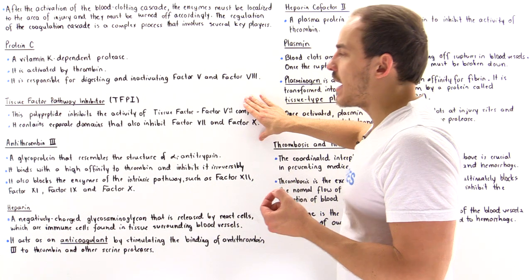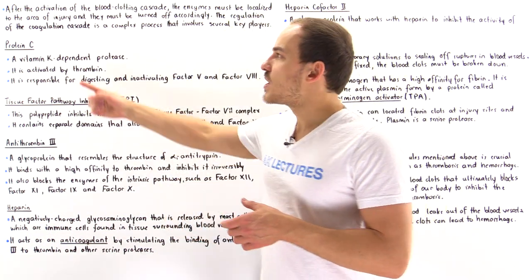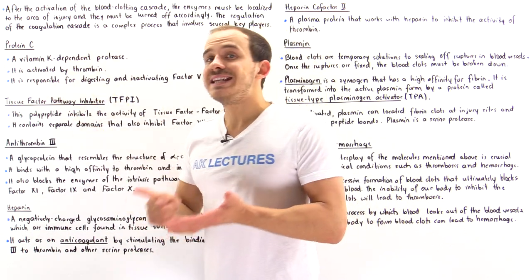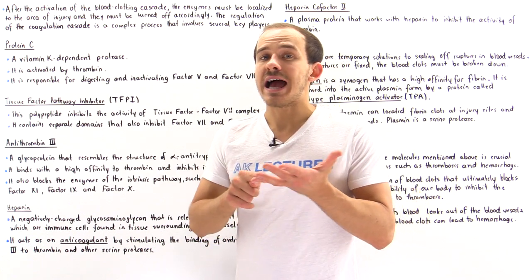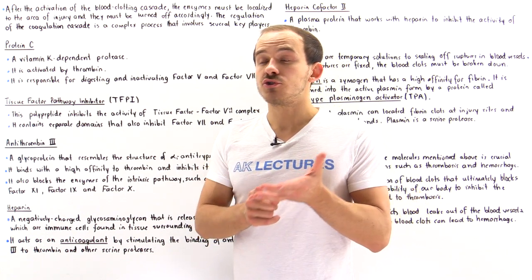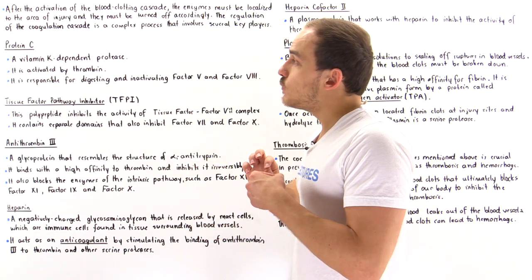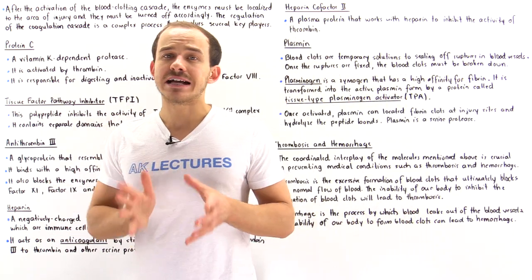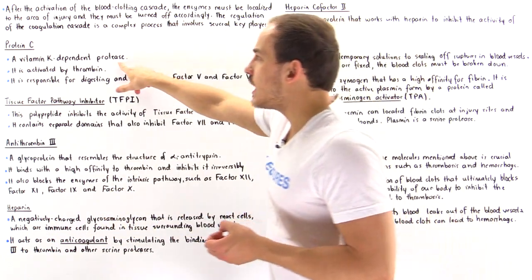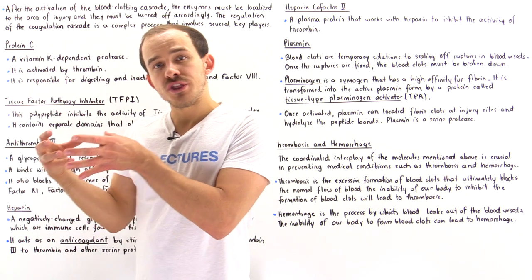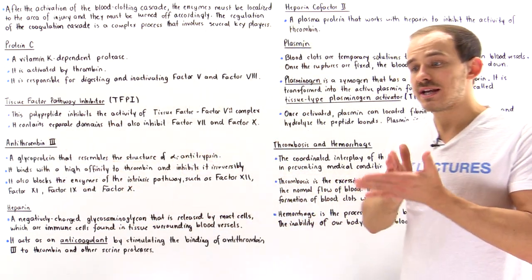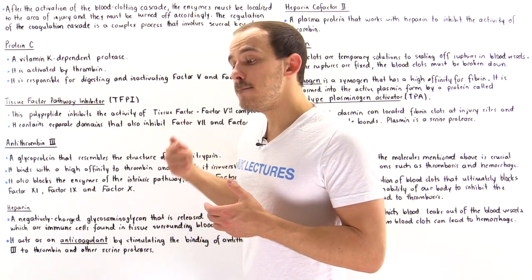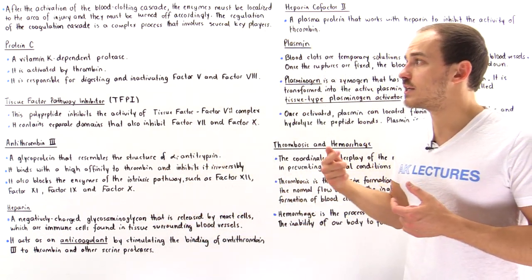Now what about our intrinsic pathway? Let's look at protein C. Protein C is a vitamin K dependent protease, meaning it depends on the presence of vitamin K to function correctly and effectively. If we have a vitamin K deficiency in our body, protein C cannot function properly. As a protease, when protein C acts with its target molecule, it hydrolyzes — it breaks the peptide bonds at specific sites on the target molecule, digesting it.